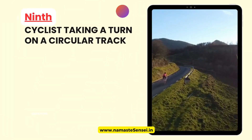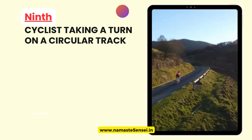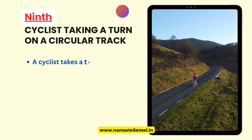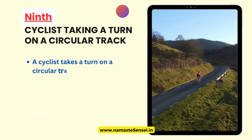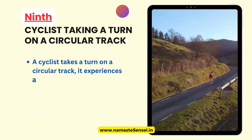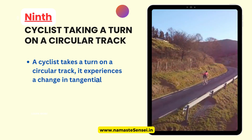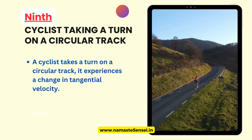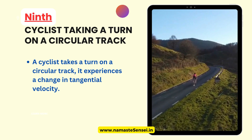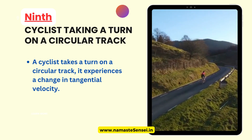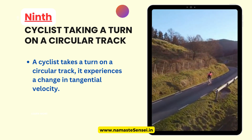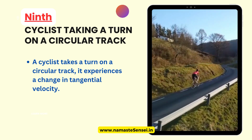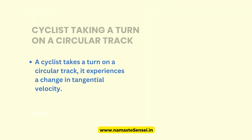Ninth, A Cyclist Taking a Turn on a Circular Track. When a cyclist takes a turn on a circular track, they experience a change in tangential velocity as they turn. The cyclist must slow down or speed up to maintain their circular path and prevent themselves from falling off the track.